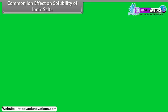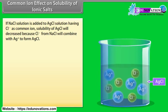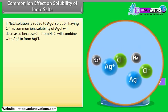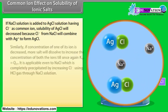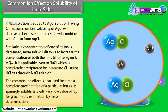Common ion effect on solubility of ionic salts. If NaCl solution is added to AgCl solution, having Cl- as the common ion, the solubility of AgCl will decrease because Cl- from NaCl combines with Ag+ to form AgCl. Similarly, if the concentration of one ion is decreased, more salt will dissolve until Ksp = Qsp again. This is applicable even to NaCl, which is completely precipitated by increasing Cl- using HCl gas. The common ion effect is also used for almost complete precipitation of a particular ion as its sparingly soluble salt with very low Ksp for gravimetric estimation.